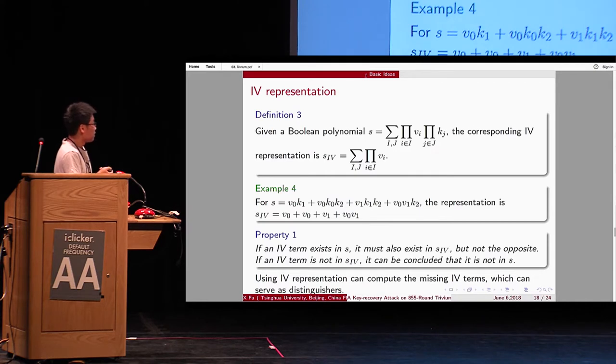So, IV representation. Given a polynomial like this, we remove the coefficient terms. For example, if s equals this, the representation is like this. Note that there are two v0. And we only left one v0.